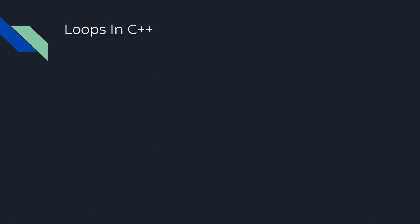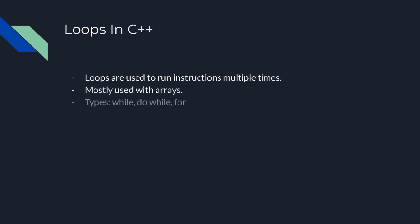In order to do meaningful operations on arrays, we need loops. Loops are used to run instructions multiple times — the most common use case is iterating through arrays to read, write, or perform some operation on each element. The three types of loops are while, do-while, and for. We won't really go over do-while as it's rarely used, but I'll briefly mention it.